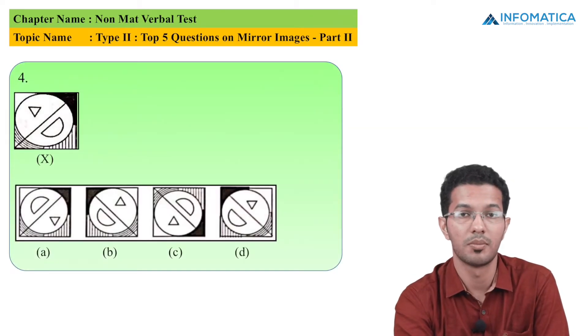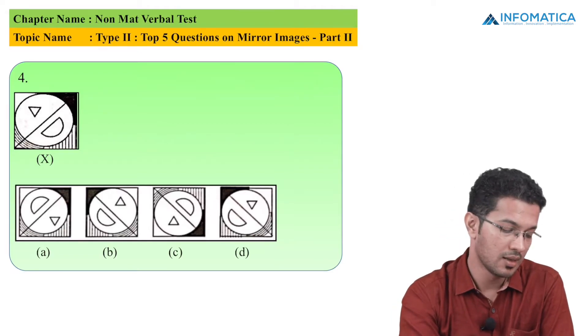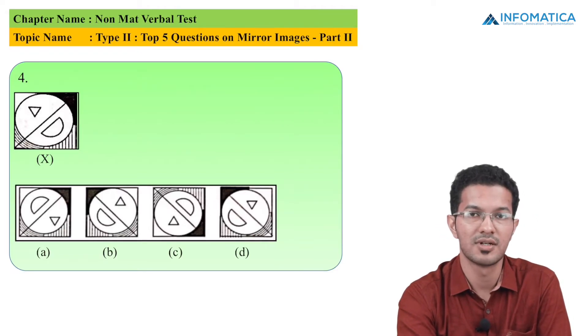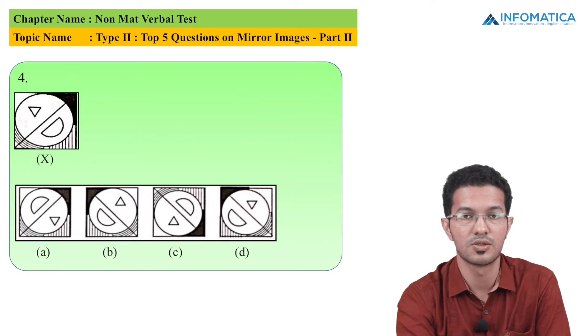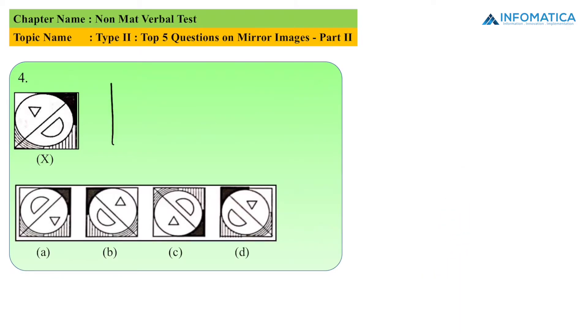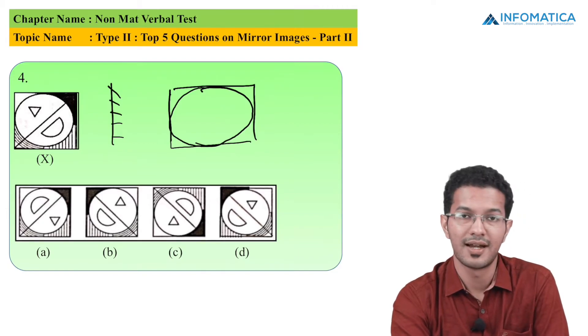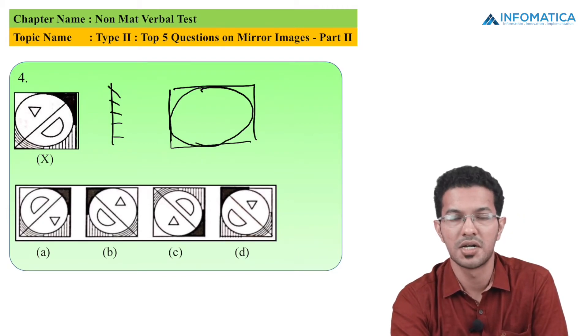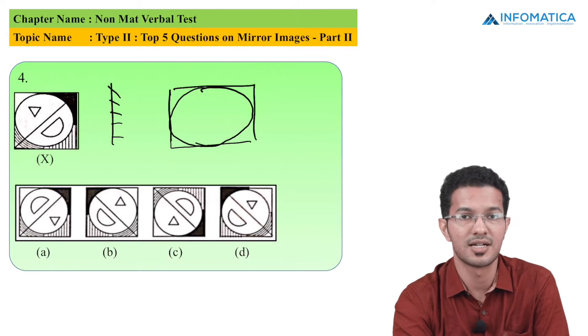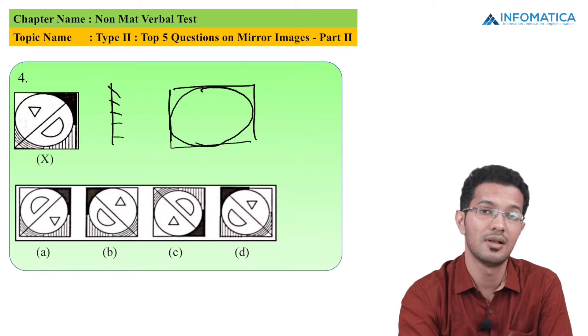Now let us go for one complex MCQ. In this, we have been given a circle having some divisions and some shades. So let me draw the solution. Students, if we look at the right hand side, there is a dark shaded area. It is on the right hand side. So if we go for the mirror image, that side should come on the left part.